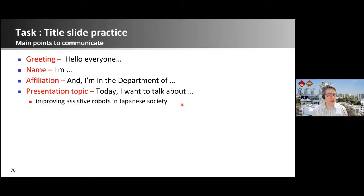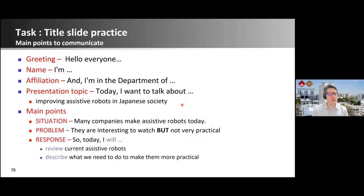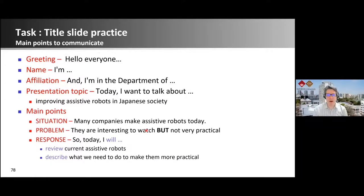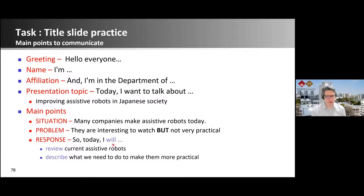Here are your main topics. First, say the situation: 'Many companies make assistive robots today — like Sony, Honda, they make them. They are interesting to watch. These robots are fun, they walk around.' But they're not very practical. For example, have you ever seen a robot walking around in a hospital helping elderly patients? Never. They're not around yet — they're not truly assistive robots. And describe what we need to do to make them more practical. Got it? In class, I explain this to the students and say: okay, you have one minute, do it now. They have no time to write a script — they've just got to say these points.